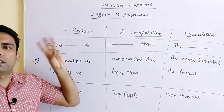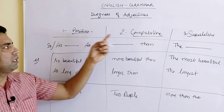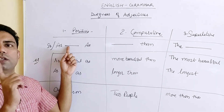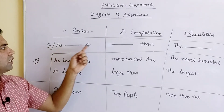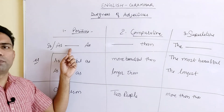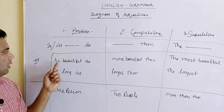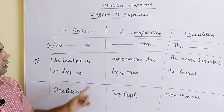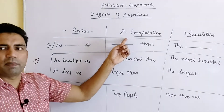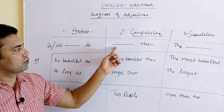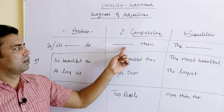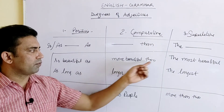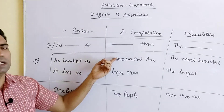Once again, the degrees of adjectives are divided into three parts: positive degree, comparative degree, and superlative degree. In positive degree, we talk about one person's quality and we use either 'so...as' or 'as...as', placing the quality in between — for example, 'as beautiful as', 'as long as'. When making a comparison between two people, we use the comparative degree, using the comparative form of the word followed by 'than' — for example, 'more beautiful than', 'longer than'.